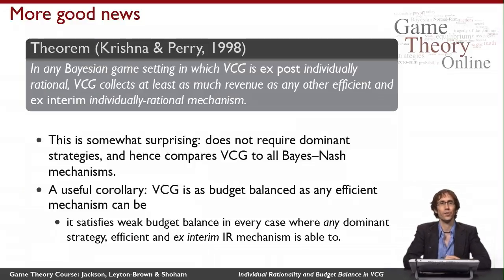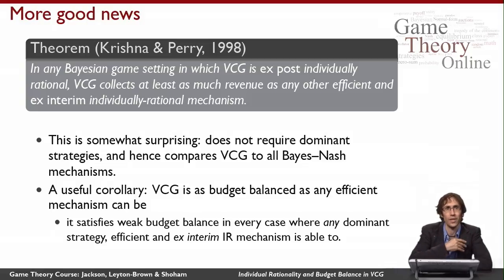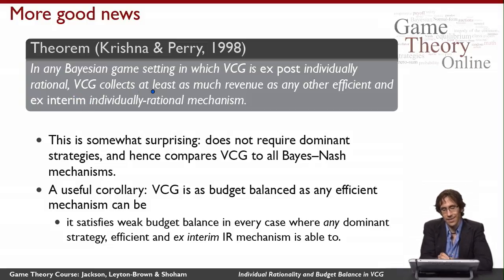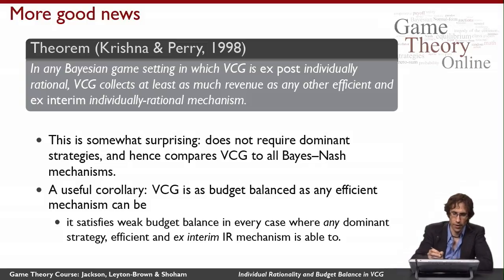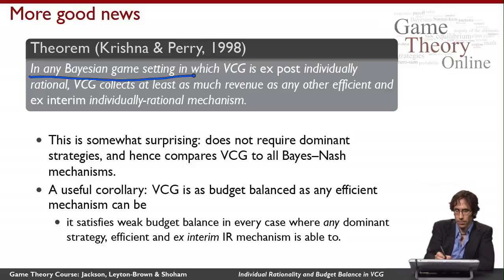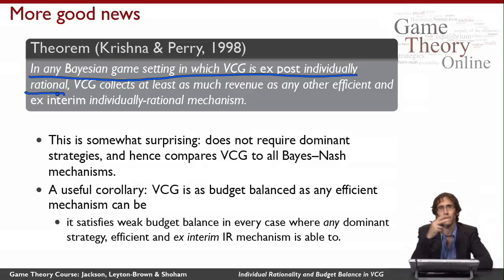Here's a theorem from Krishna and Perry with one final piece of good news. Consider any Bayesian game setting in which VCG is ex post individually rational. The claim is that VCG collects at least as much revenue as any other efficient and ex interim individually rational mechanism. This competitor mechanism can use Bayes-Nash equilibrium — not just dominant strategies — so it's drawn from a much bigger pool. And we only require ex interim individual rationality of it, which is weaker than the ex post individual rationality we require of VCG, making the comparison even stronger.